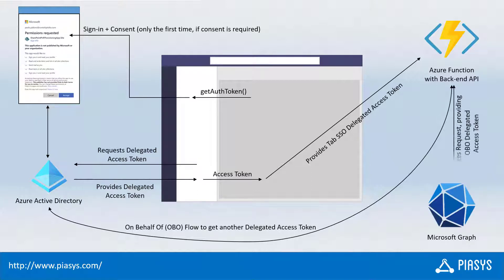Let's imagine that we want to consume Microsoft Graph. Providing the new access token that we've got through the OBO flow, we can then consume Microsoft Graph in the name of the currently connected user. And we can provide back from the back-end API to the Teams tab the data and values requested by the custom logic. So it is quite a complex architecture, but really powerful because we can have a custom Teams tab able to consume a back-end API and the workloads of Microsoft 365 in the name of the currently connected user.